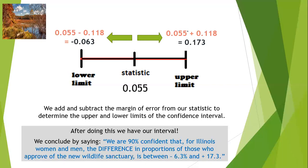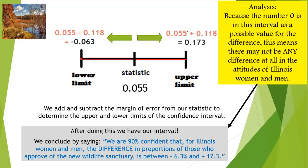Let's think about that result. The likely values range from negative 6.3% to positive 17.3%. Because zero is inside that interval as a possible value for the difference, we have found that there may not be any difference at all in the attitudes of Illinois women and men. Even though our sample statistic showed 5.5% higher support among women, because of the margin of error, it's still very possible that there may be no difference.